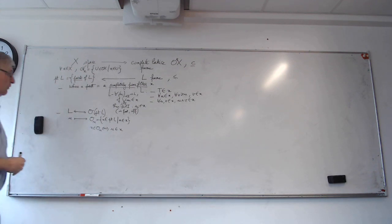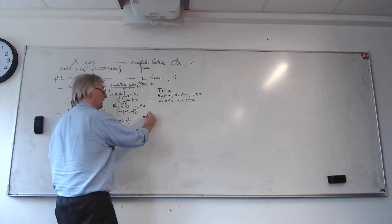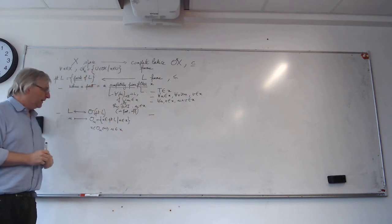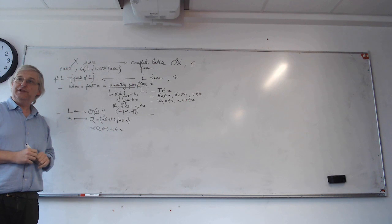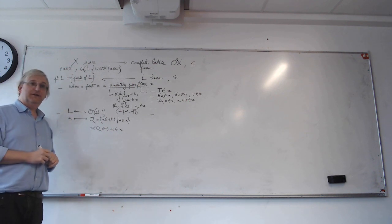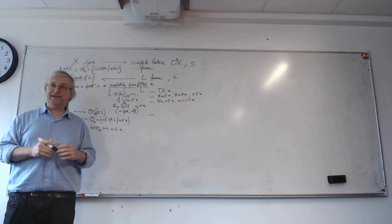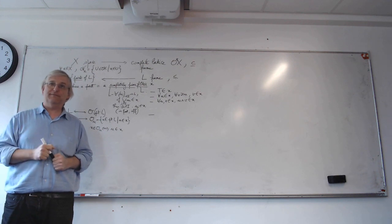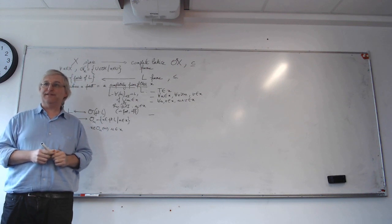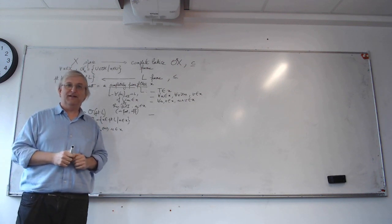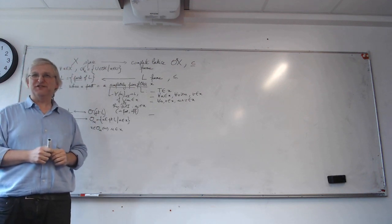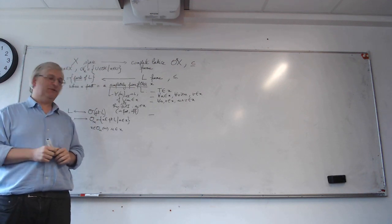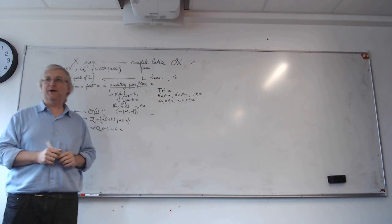Let me show you why. You have to show it's closed under finite intersections and arbitrary unions. Let me start with finite intersections. The case of zero objects has to be dealt with separately and certainly shouldn't be forgotten. The case of one doesn't need special treatment, and the other cases are obtained from the binary case by induction.